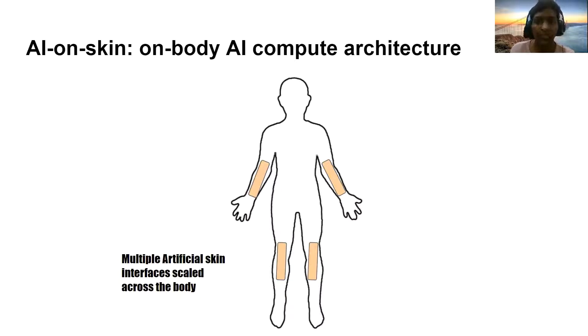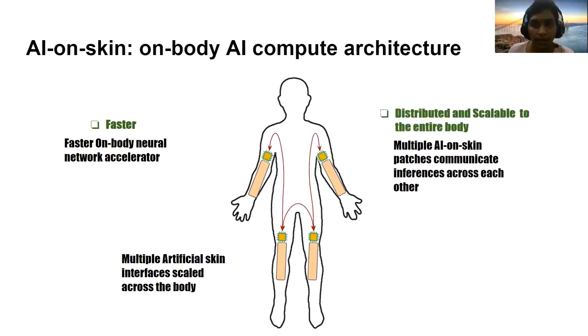With AI on Skin, each skin patch will have the ability to do on-body neural network inference using faster on-body neural network accelerators realized using ASICs or FPGAs. And the architecture of AI on Skin is distributed and can be easily scaled across the body.